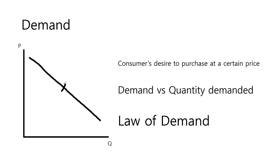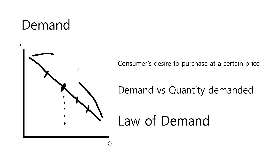The quantity demanded refers to a certain quantity that consumers are willing to purchase at a certain price. So each individual point on the graph is an example of quantity demanded. On the other hand, demand refers to the graph as a whole. Simply put, quantity demanded represents the points, and demand is the line.